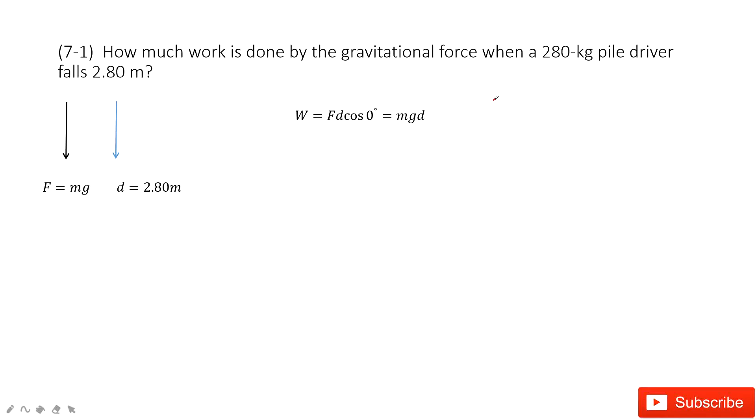We need to find the work when we know the gravitational force. This force comes from the gravitational force, which is mass times acceleration due to gravity, g. The mass is given, and also the distance it moved is 2.8 meters.